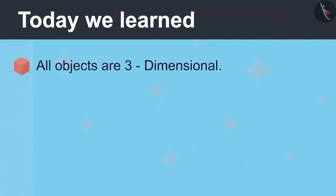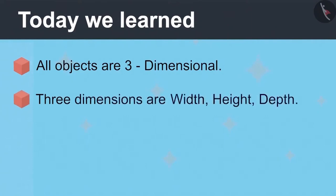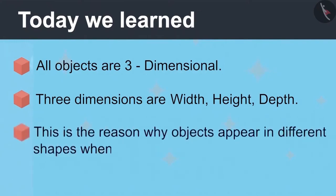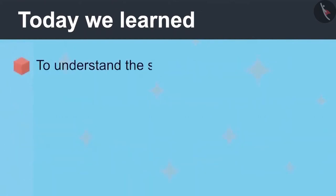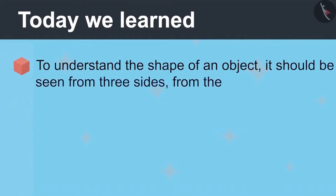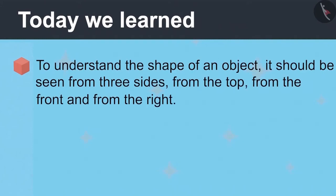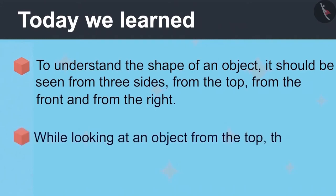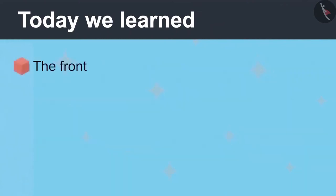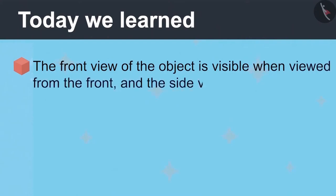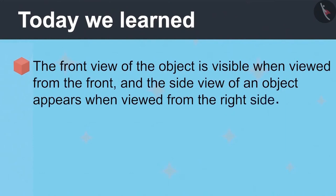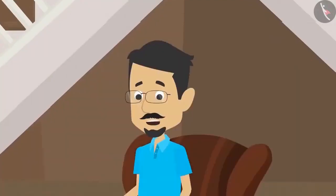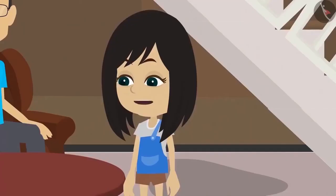Now I have fully understood that all objects are three-dimensional. The three dimensions are width, height and depth. Because of this, objects appear to be of different shapes when viewed from different sides. To understand the exact shape of an object, one must look at it from three sides — from the top, front and from the right side. While looking at an object from the top, the top view appears. The front view is visible when viewed from the front. And the side view appears when viewed from the right side. Now you both play and I'll do my work. We will go and play and we'll tell everyone about 3D in school tomorrow.